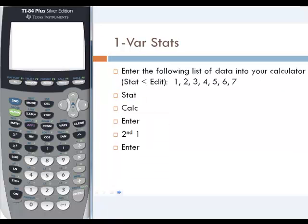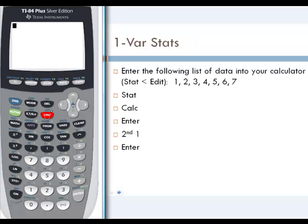To get our calculator to do OneVarStats, we first have to get our data into the calculator. To enter data into the calculator, we will press the STAT key, which is near the arrows, and then we want to edit. So we just press enter since edit is already selected.